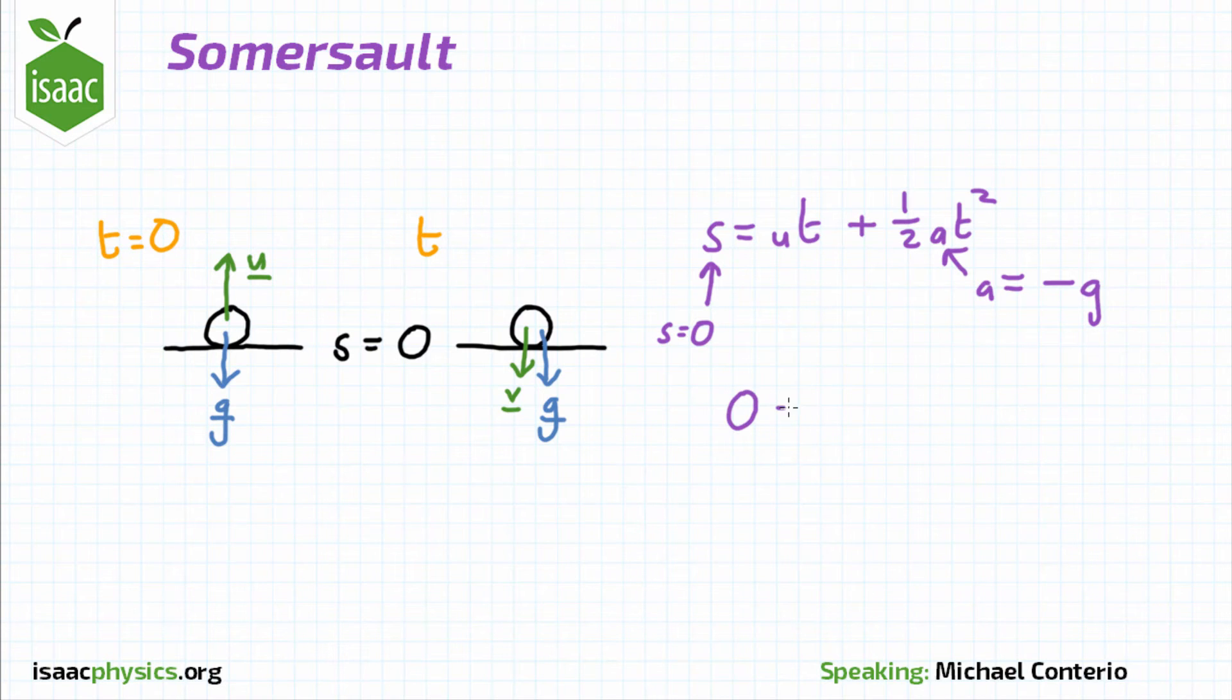This then gives us 0 equals ut minus g over 2 times t squared. One solution for this is t equals 0, but that's just the start before the gymnast has jumped.